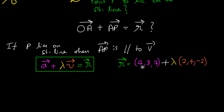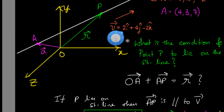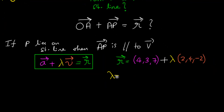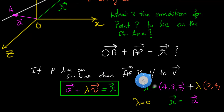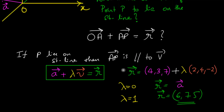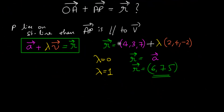Let's play with this equation. Different values of λ give all the points on the straight line. If λ = 0, we get R = (4, 3, 7), which is just point A — that makes sense since A lies on the line. If λ = 1, we get: 4 + 2 = 6, 3 + 4 = 7, 7 − 2 = 5. So the point (6, 7, 5) also lies on the straight line. This is the vector equation of the straight line.